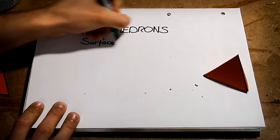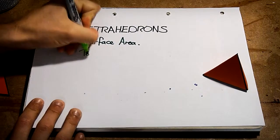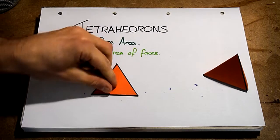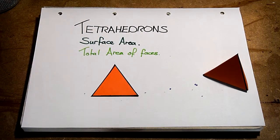Surface area is simply the area of all the faces of a shape added together. Since each face is an equilateral triangle, we need to work out the area of an equilateral triangle first.